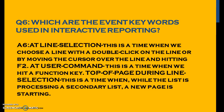TOP OF PAGE DURING LINE SELECTION is triggered while the list is processing a secondary list and a new page is starting. It is basically used for getting the top of page for the secondary list. So the three events are: AT LINE-SELECTION, AT USER-COMMAND, and TOP OF PAGE DURING LINE SELECTION.